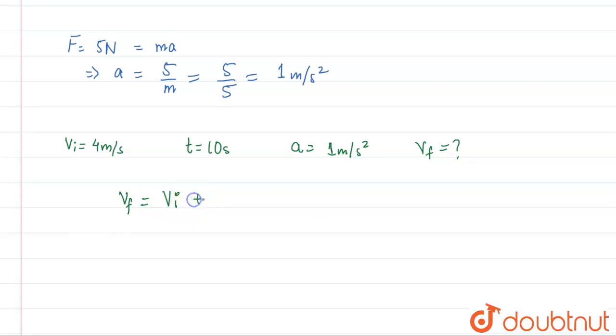So v_f is what we have to find: 4 plus acceleration is 1 and t is 10 seconds. So this will come out to be v_f equals 14 meter per second.